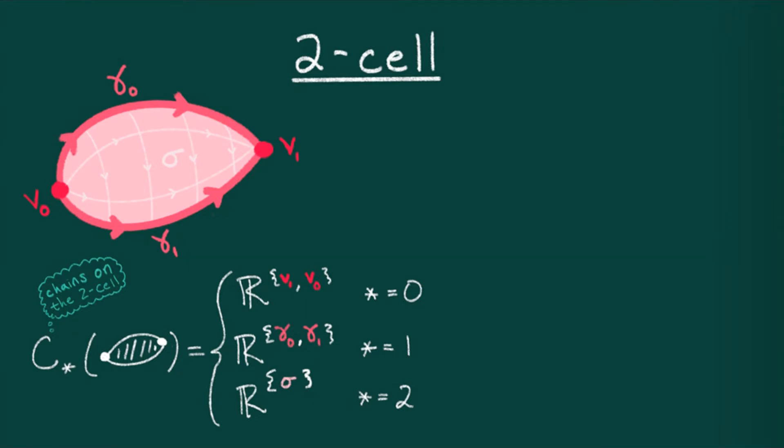Okay, so let's go into the interesting part, the boundary operator, which encodes how these various pieces glue to the pieces one dimension lower. As there's nothing in degree minus one, the boundary of v0 and v1 is zero. Next, we need to define how the boundary operator acts on the degree one piece. This is exactly the same as our construction with graphs.